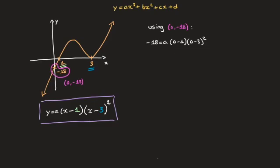Now, taking care of the parentheses here, this becomes negative 18 equals a times 0 minus 1, which is negative 1, times 0 minus 3, which is negative 3, squared. That becomes negative 18, which equals a times negative 1, times negative 3 squared, which is 9. In turn, that becomes negative 18, which equals a times negative 1, which is negative a, times 9. So that's negative 9a.